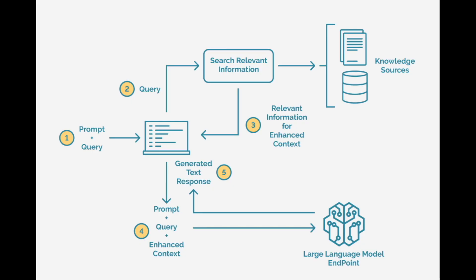Hello friends, welcome back to my channel. In this demo we are going to build an end-to-end Retrieval Augmented Generation, which stands for RAG, AI system. We are going to use LangChain for the RAG framework, FAISS for the vector store, a Hugging Face model as our LLM, and then Gradio for the front end.